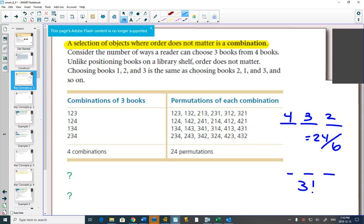And in this case, 24 objects divided out the order, you're left with only 4 combinations left.